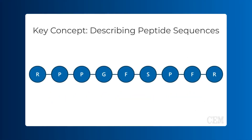Peptides are commonly described based on the number of amino acids they contain. A dipeptide, also referred to as a dimer, consists of two amino acids linked by a peptide bond. A tripeptide (3-mer) has three, a tetrapeptide (4-mer) has four, and so on. Our example peptide, bradykinin, is a 9-mer or nonapeptide.